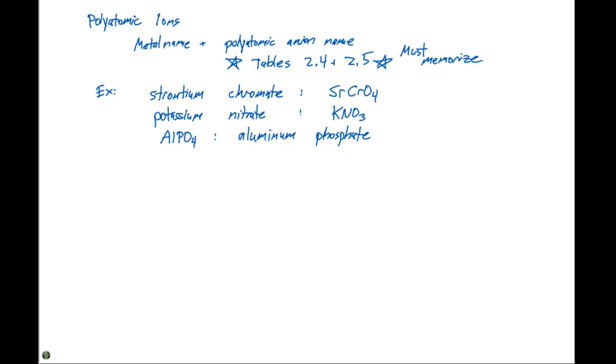The next one we're given would be Fe(ClO4)2. So in this case, we have iron, and we're gonna have perchlorate, which is ClO4. Perchlorate has a minus 1 charge. If we have two of them, that means the iron has to have a plus 2 charge.